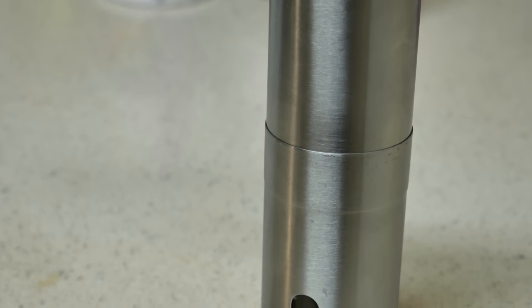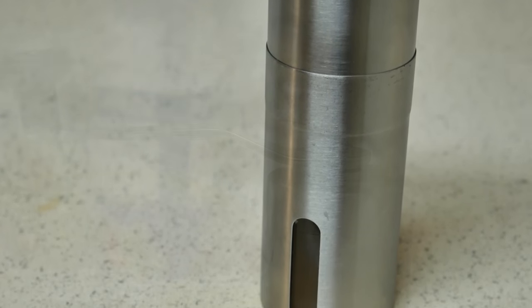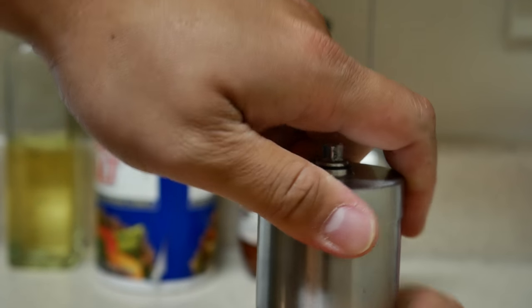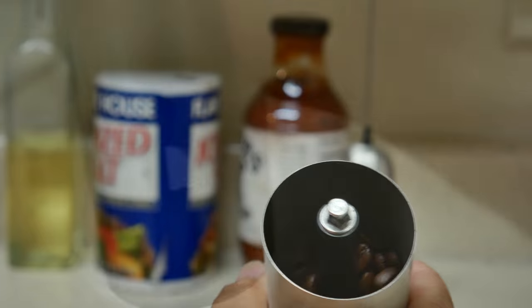It's super easy to use. All you have to do is insert your coffee beans by removing the top cap of the grinder. Hand grind your coffee beans into the amount you want. There's even a double-sided window to see how much coffee you grind.